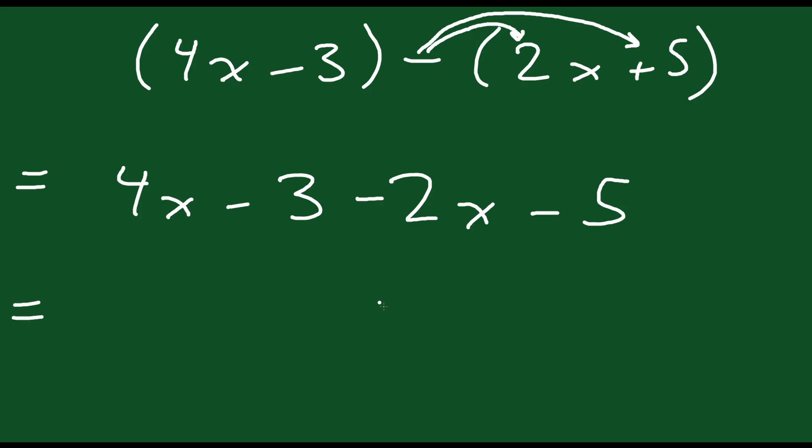From here you can collect like terms just like we did before. 4x minus 2x is 2x. Negative 3 minus 5 is negative 8. And you're all done.